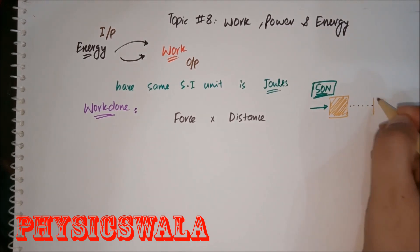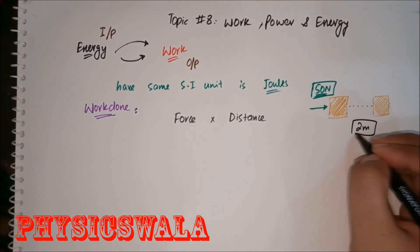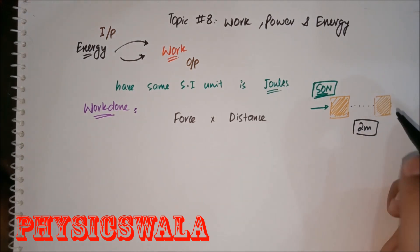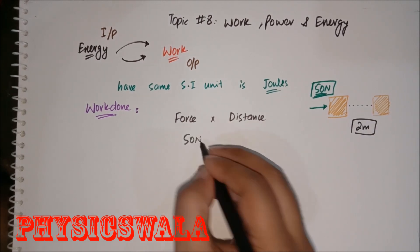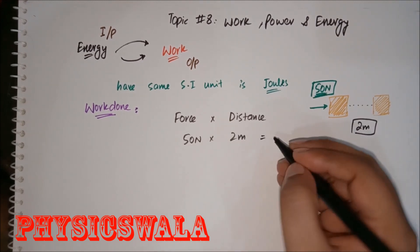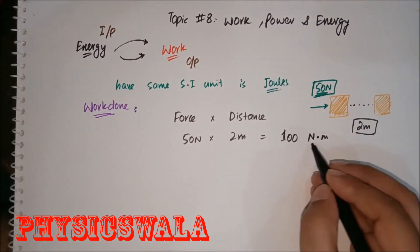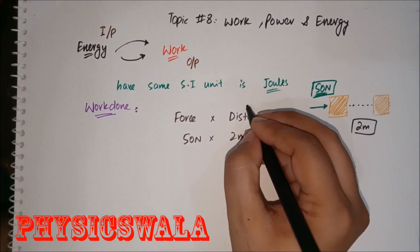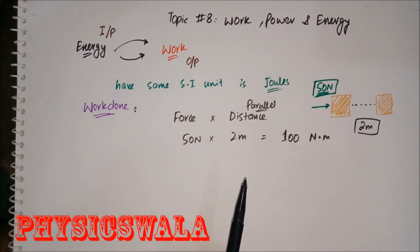And what happens? This box moves forward and moves about, let's say, two meters. The distance it covers is two meters. So what is the work done I have here? The force I applied was 50 Newtons multiplied by the distance I applied is two meters.